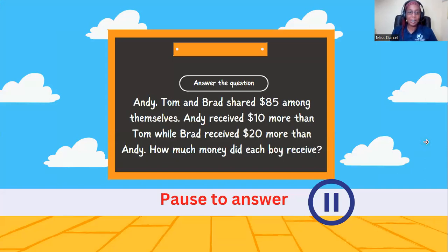So Andy, Tom, and Brad shared $85 among themselves. Andy received $10 more than Tom, while Brad received $20 more than Andy. How much money did each boy receive? Now this one is a little tricky, so I really need you to take your time.